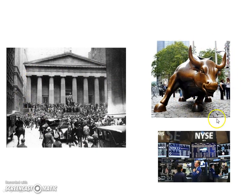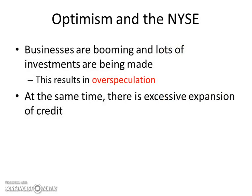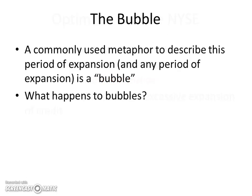There's the bull that is now on Wall Street today to symbolize that bull market, and here's a modern image of the New York Stock Exchange, very automated these days. Businesses were booming, lots of investments were being made, and this resulted in over-speculation — too many people. Every little guy thought he could get in on the deal and make a few bucks. At the time, there was an excessive expansion of credit; people were borrowing money left and right, and banks were giving money away with low interest rates and expecting a return on their own investments.